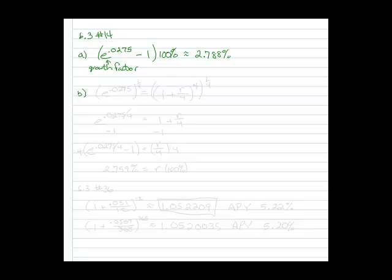So the growth factor for the APY in part A was e to the .0275. Now a growth factor for a rate compounded quarterly would be 1 plus the rate, which is what we're looking for, over the number of times it's compounded, so 4, raised to the 4. So this is the equation we need to solve for R. We're just setting the two growth factors equal to each other.